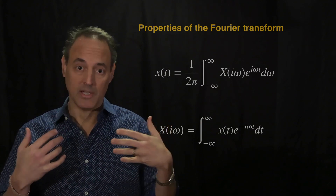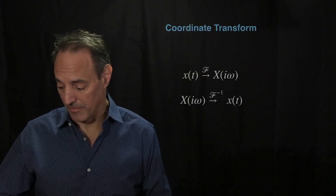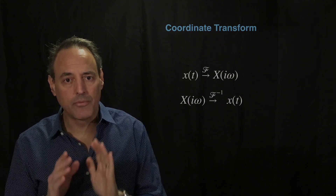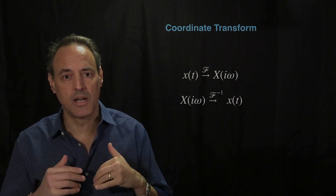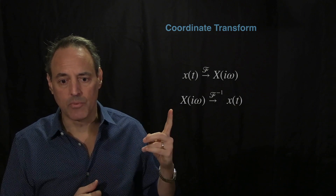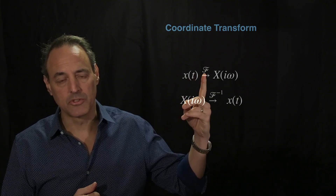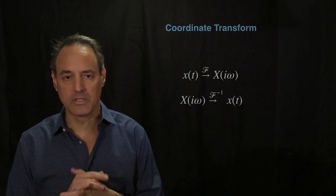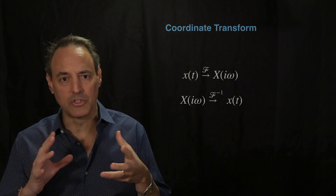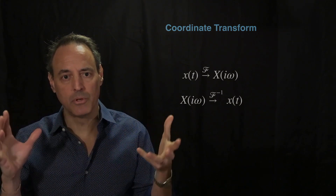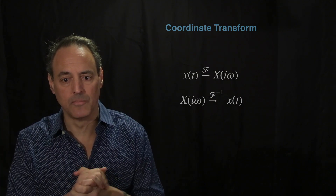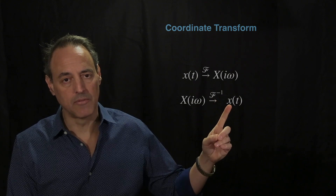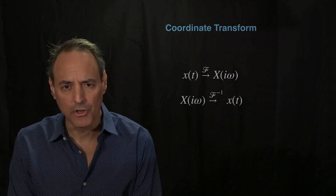The first property is linearity, which is probably the most important of all. Let's think about this more abstractly as a coordinate transformation — that's ultimately what the Fourier transform is. It's a coordinate transform from time to frequency. The frequency domain is an ideal coordinate system where all frequency modes are orthogonal to each other, giving you an infinite-dimensional orthogonal space. To come back you apply the inverse Fourier transform.